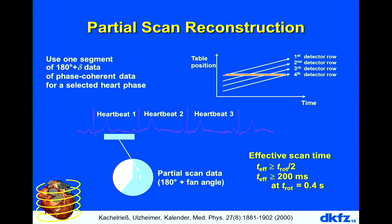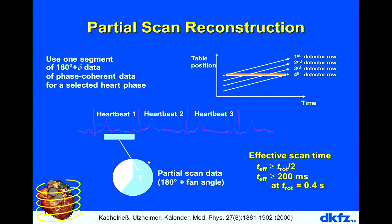Two different techniques are used for image reconstruction. The first is partial scan reconstruction: you need 180 degrees of data, take a data window within a heartbeat, and reconstruct — simple and dominant today. The second is multi-segment reconstruction, developed when scanners were too slow about 20 years ago: you collect 180 degrees from several heartbeats — for example 3 times 60 degrees — stitch them together, and improve temporal resolution by a factor of three.